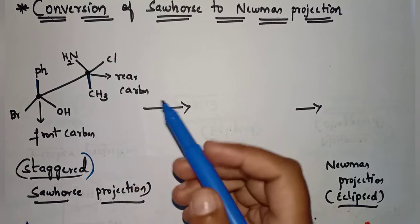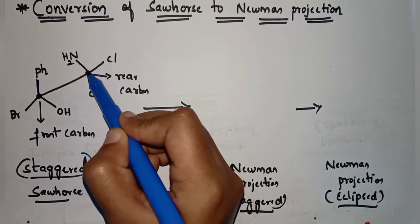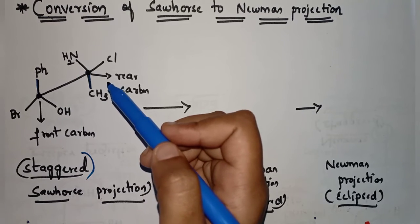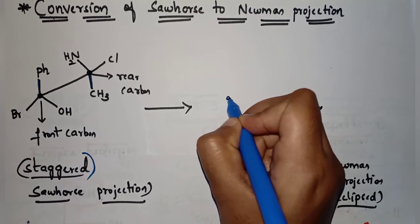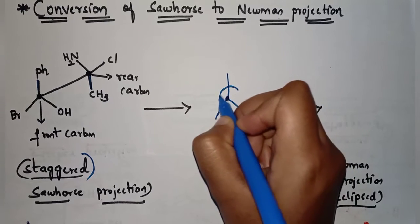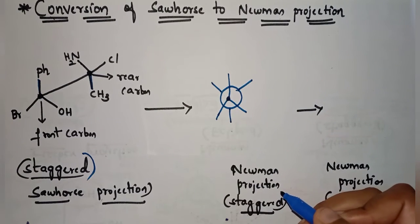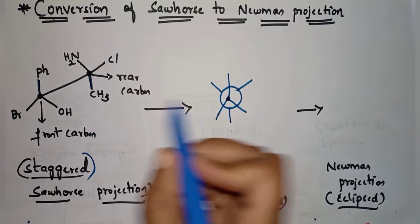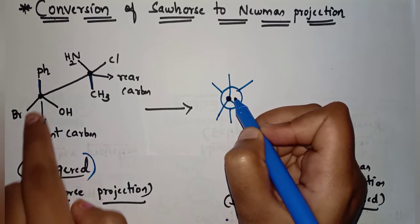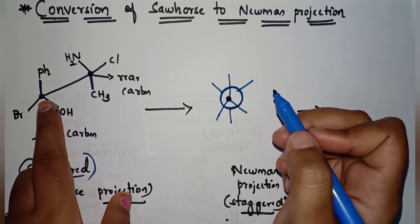In this sawhorse projection, the front carbon has groups attached to it, and the rear carbon also has groups attached to it. In the Newman projection, the front carbon is represented by a dot and the rear carbon is represented by a circle. Let's first write the staggered Newman projection with a dot and a circle.